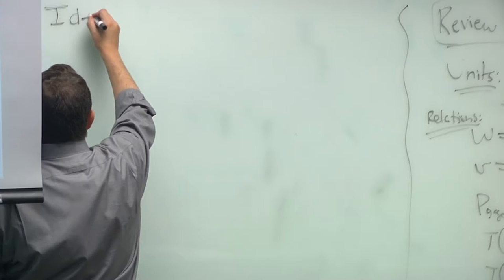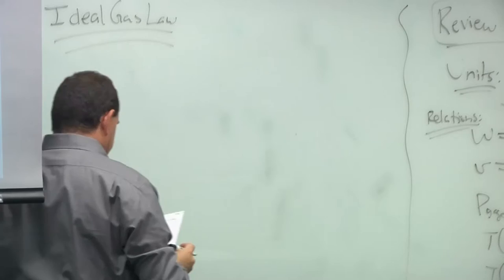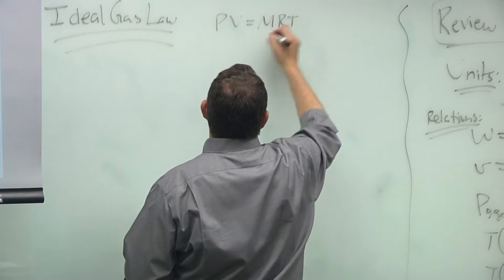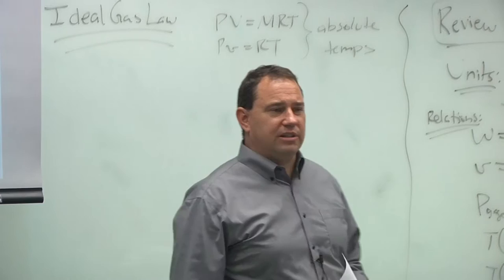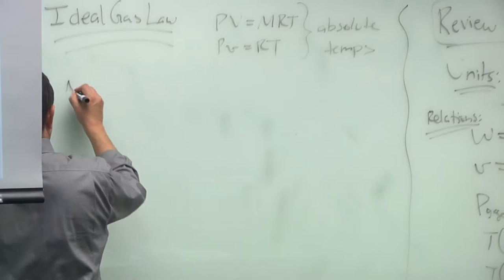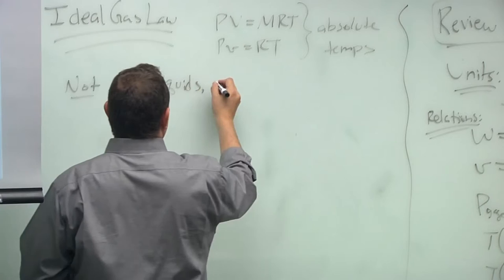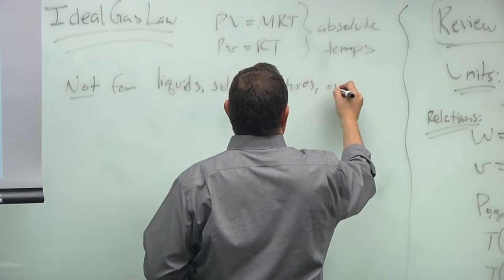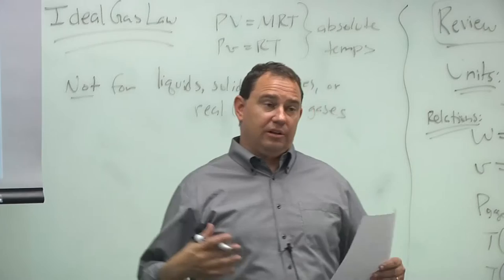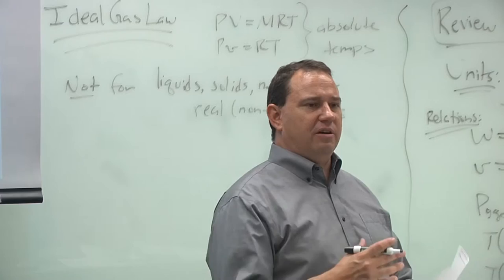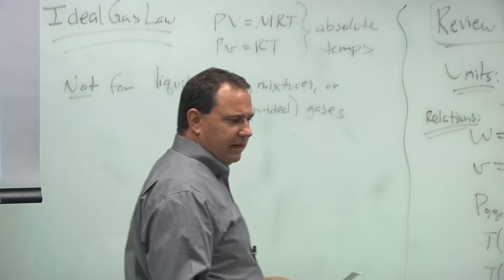You know the ideal gas law: PV equals mRT or P little v equals RT. Those are absolute temperatures - that's a typical place to make errors. It is not for liquids, solids, mixtures, or real non-ideal gases. Ideal gases are low pressure gases where they feel like billiard balls when they bump off each other.